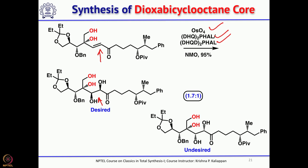Treatment with HCl and methanol removes the ketal group to form a diol. The two hydroxyl groups, together with the carbonyl, then form a new ketal to give the bicyclic product. At this point the core structure of zaragosic acid is formed.